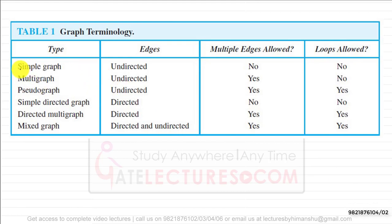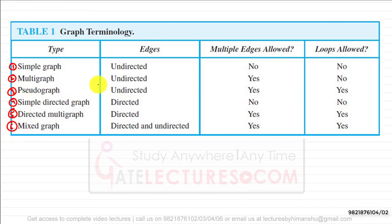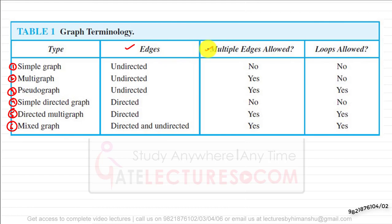There are different types of graphs: simple graph, multi graph, pseudo graph, simple directed graph, directed multi graph, and mixed graph. These graphs are differentiated by the number of edges, the kind of edges they have, whether they allow multiple edges, and whether they allow loops.